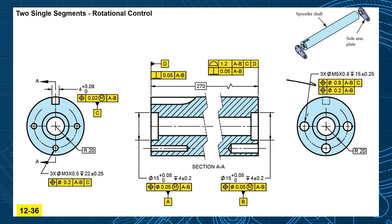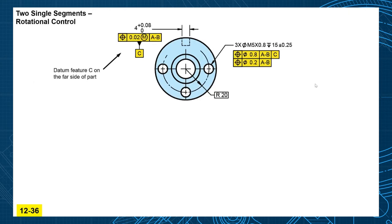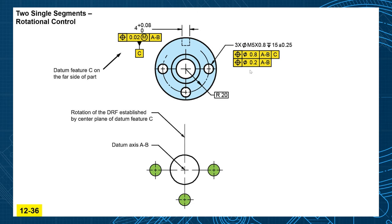I'd like to animate these feature control frames a little bit better. Remember the slot is on the far side of the part, that's why I have it as a hidden line, and we're looking at these three holes on this near side. So the top position frame, what do the tolerance zones look like? Here are your exaggerated tolerance zones of 0.8 and those are fixed and referenced to your datum reference frame and when you're clocked to your C datum center plane there.